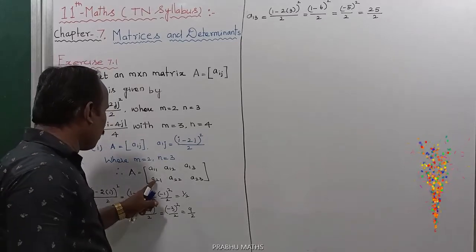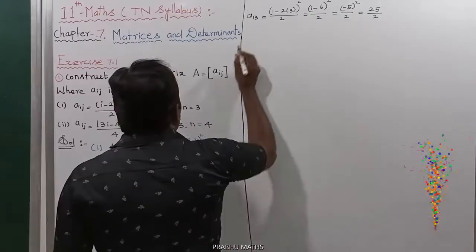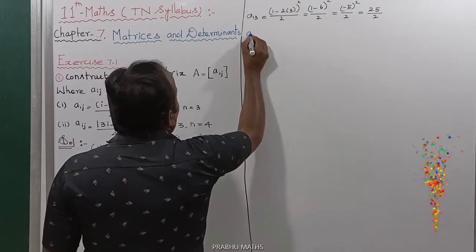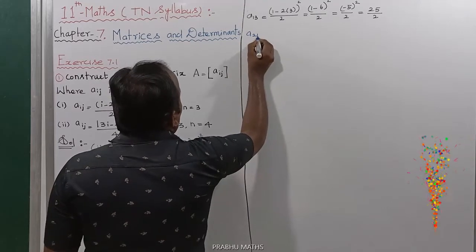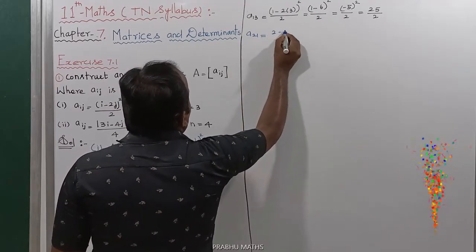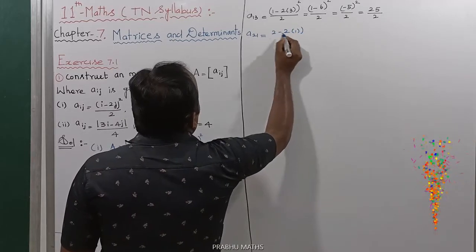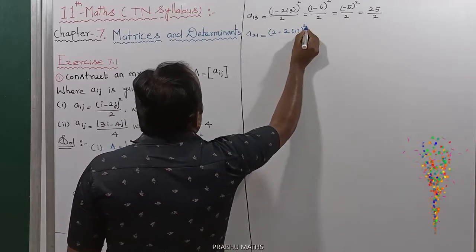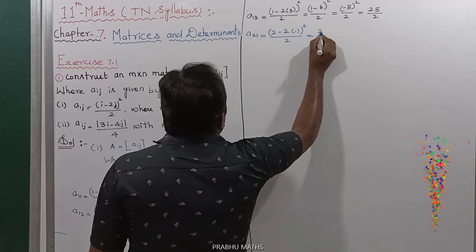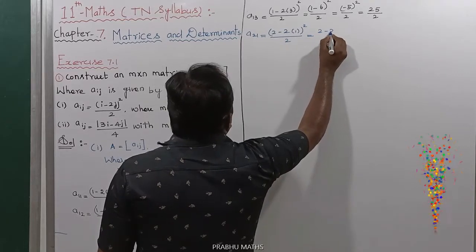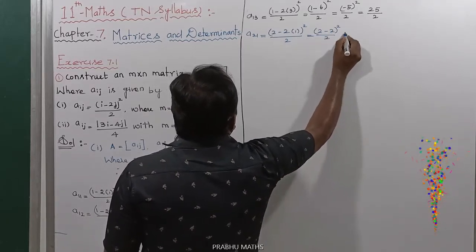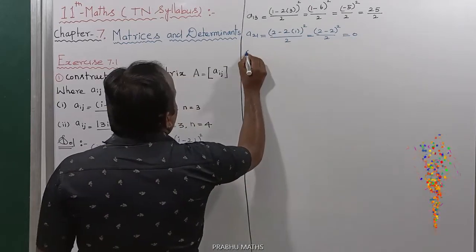Second row: A₂₁. A₂₁ is equal to (2 minus 2 into 1) whole square divided by 2, equal to (2 minus 2) whole square divided by 2, equal to 0 whole square divided by 2, which is equal to 0.